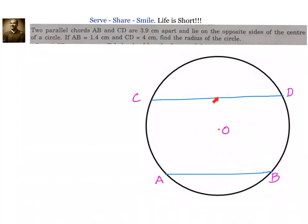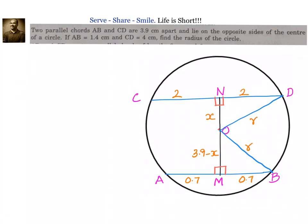If we draw the perpendicular from the midpoint of CD to the midpoint of AB, we know it will pass through O, because of the theorem that if you drop a perpendicular from the center to a chord, it bisects the chord. So let us join the midpoints of CD and AB through O, and also get the radius in place so we can use Pythagoras theorem. We have joined these midpoints through O because MON is a straight line.